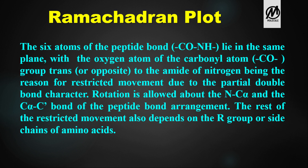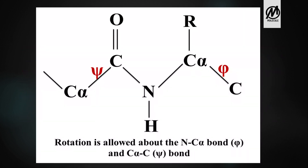Coming back to the Ramachandran plot: it is used to show the dihedral angles formed by the peptide bond and its rotation. The six atoms of the peptide bond lie in the same plane, with the oxygen atom of the carbonyl group trans to the amide nitrogen, causing restricted movement due to the partial double bond character. Rotation is allowed about the nitrogen–alpha carbon bond, denoted as phi, and about the alpha carbon–carbonyl carbon bond, denoted as psi. Rotation between the carbonyl carbon and nitrogen of the peptide bond is restricted.